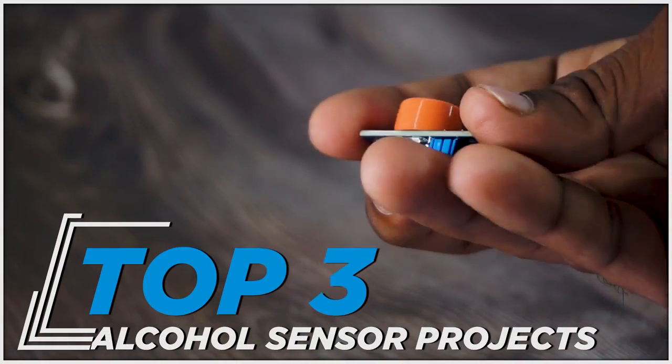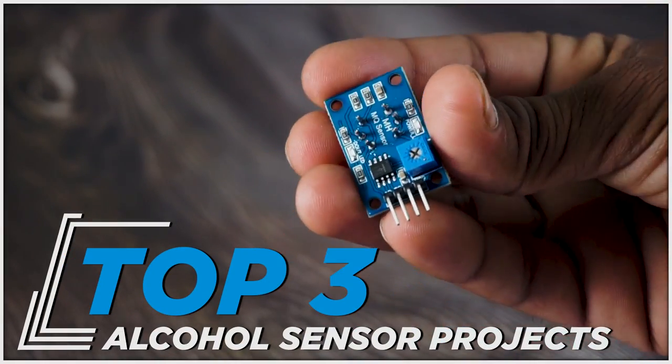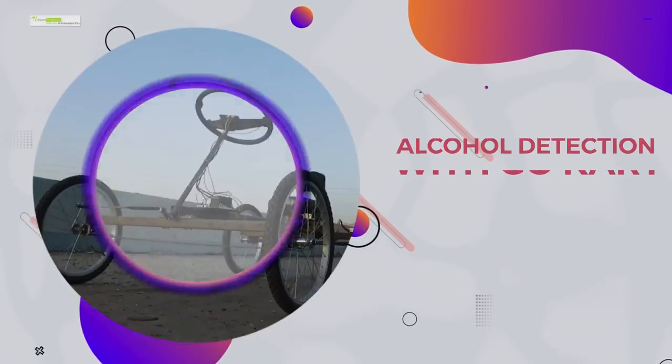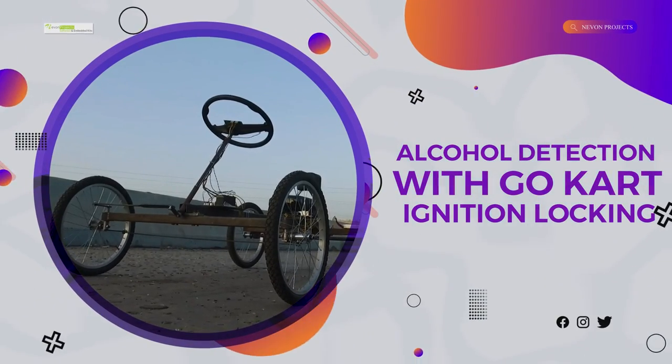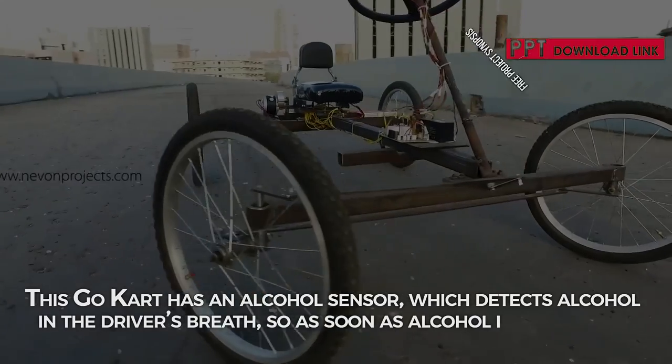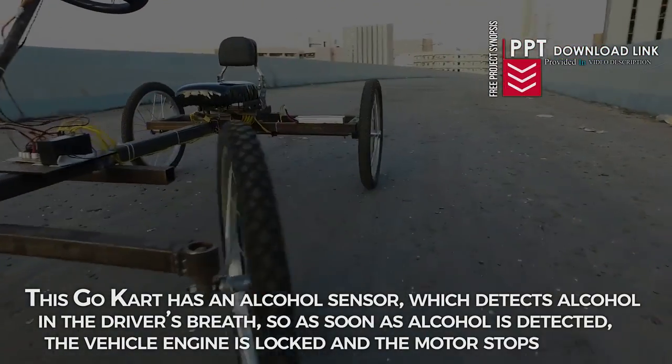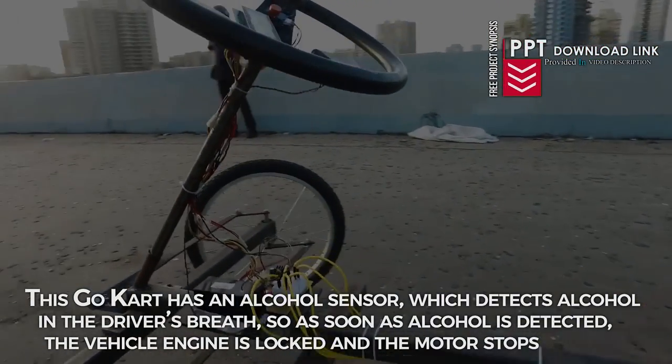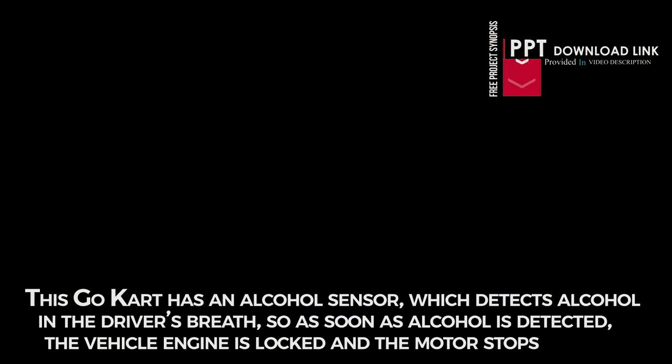Now let us see the top three projects where MQ3 alcohol sensor has been used. Alcohol detection with go-kart ignition locking project. This go-kart has an alcohol sensor which detects alcohol in the driver's breath. So as soon as the alcohol is detected, the vehicle engine is locked and the motor stops.